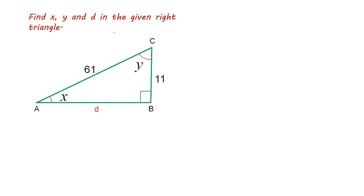Hello. In this video, let us solve this problem. Find x, y and d in the given right triangle. So you are given a right triangle ABC in which angle B is 90 degrees and AC is hypotenuse. The length of hypotenuse is 61 units, BC 11 units. We have to find angle x, angle y and the length d.